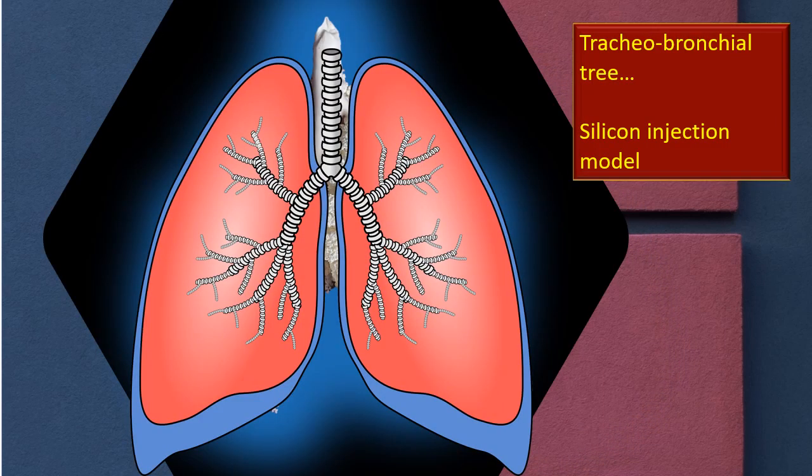This is another way of looking at the tracheobronchial tree. Using a silicon injection technique — which I have done and it has come out well — we can bring out the bronchial tree in complete detail. Once the silicon is injected into the tracheobronchial tree, the rest of the lung parenchyma is removed by dipping it for a long time in one of the strong acids. After some cleaning, this is how the tracheobronchial tree looks — from a real lung.